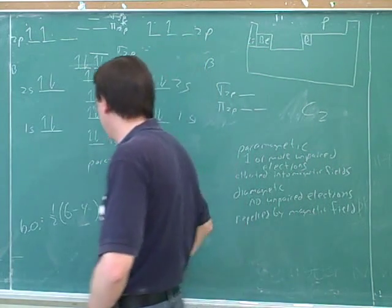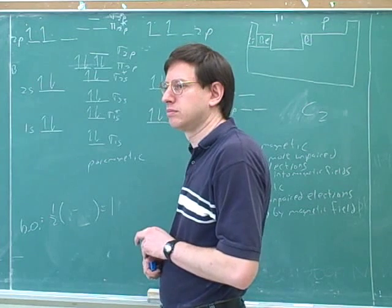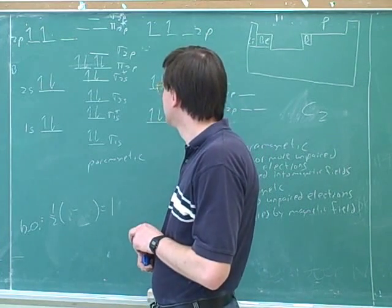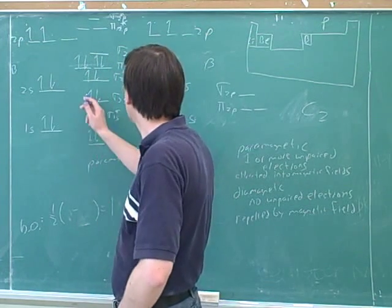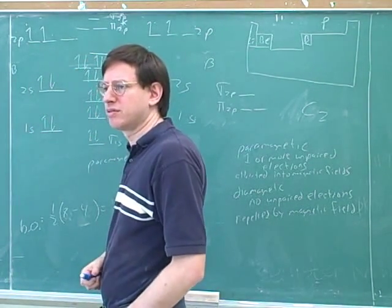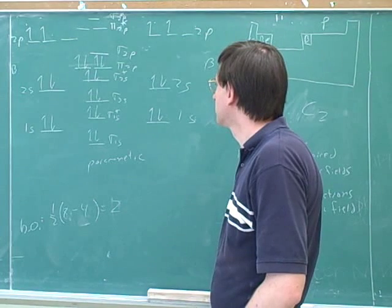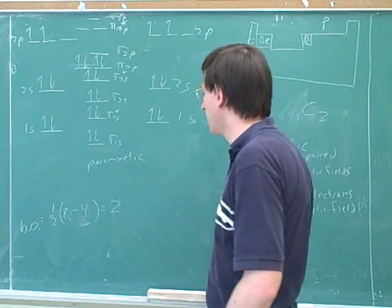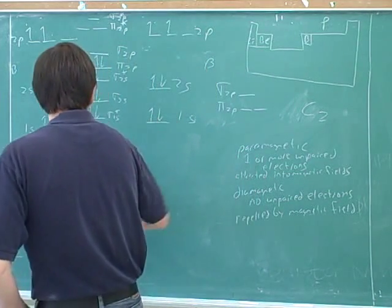So what would be the bond order? Two. I just thought in my head that might not be right, but it's eight minus four, right? Two. Sounds random. Good. OK. A bond order of two, would this be para or diamagnetic? Diamagnetic. Now we're back to diamagnetic.